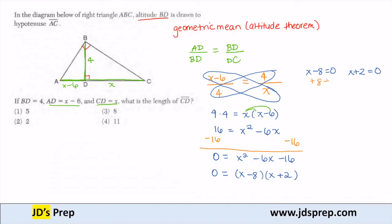For x minus 8 equals 0, I add 8 and get x equals 8. For x plus 2 equals 0, I subtract 2 and get x equals negative 2. Because I'm dealing with a length, it does not make sense to have a negative length, so we can reject that solution. Therefore, x has to be equal to 8.